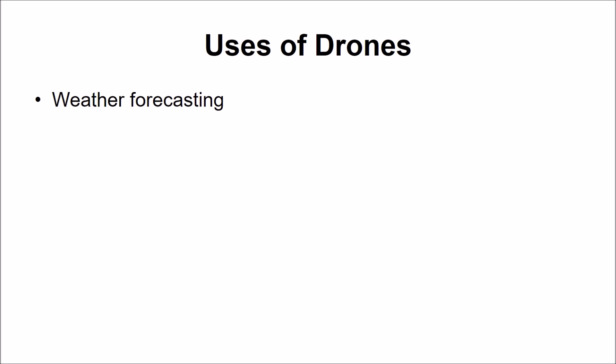Let us look at a few instances where drones are useful. First, Weather Forecasting: drones are extremely useful in keeping an eye on developing weather conditions in real time and supply remote imagery and storm data to assist with life-saving measures. In countries like India, where monsoons are becoming increasingly unpredictable, they can help protect loss of life and property damage with advanced warning.